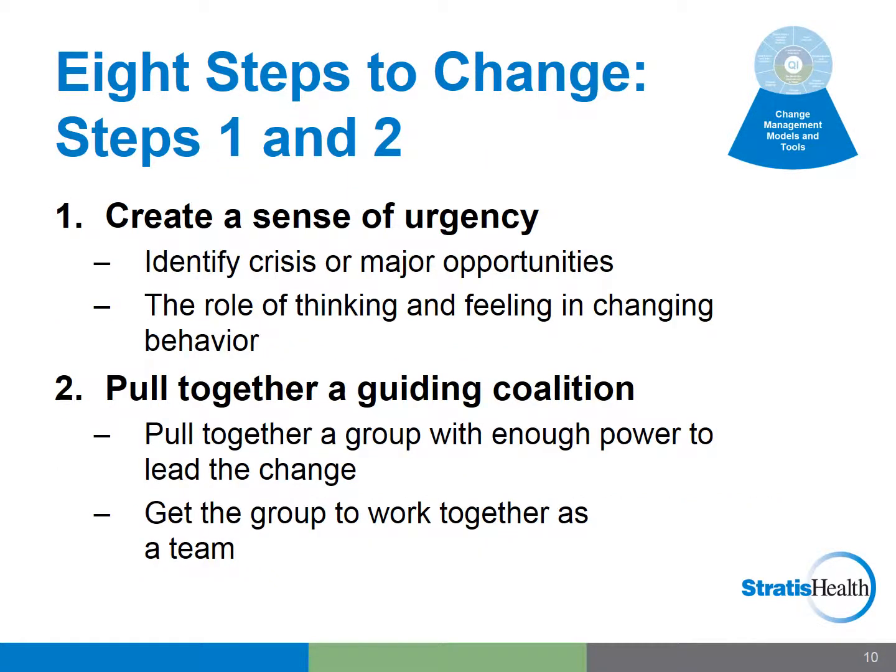In the first step of the model, you simply need to get people's attention, sell the need for change, explain the pain and the consequences of not changing, and immerse people in information about the change. By doing so, you are addressing the thinking and feeling aspects that lead to changing individual behavior. Discuss ways to solve the problem such that people identify with the change and buy into the need for change that you propose. In the second step, you need to pull together a guiding coalition with enough power and leadership to implement the change you are seeking and ensure the group works together as a team.